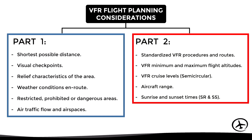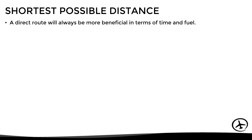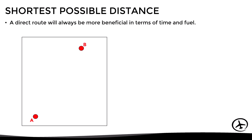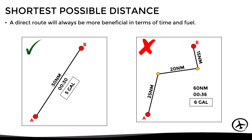Let's start with the route distance. Clearly, the shorter the route is, the greater the savings in fuel and flight time. In this example, if we plan a direct route between A and B, we obtain a total distance of 50 miles, which in a small general aviation aircraft corresponds to 30 minutes of flight time and five gallons of fuel. If we plan this same flight with a route that passes through checkpoints far from the direct route, the total distance becomes 60 miles — an increase of about six minutes and one more gallon of fuel.